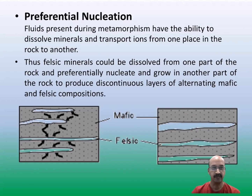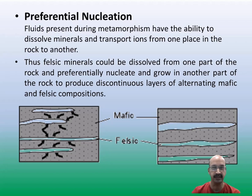One more mechanism of metamorphic differentiation is preferential nucleation. During metamorphism, the fluids present in the rock have the ability to dissolve minerals and transport ions from one place to another. Felsic minerals could be dissolved from one part of the rock and preferentially nucleate and grow in another part of the rock, producing discontinuous layers of alternating felsic and mafic compositions, giving rise to alternate layers of mafic and felsic minerals. Thus the final product is metamorphic differentiation.